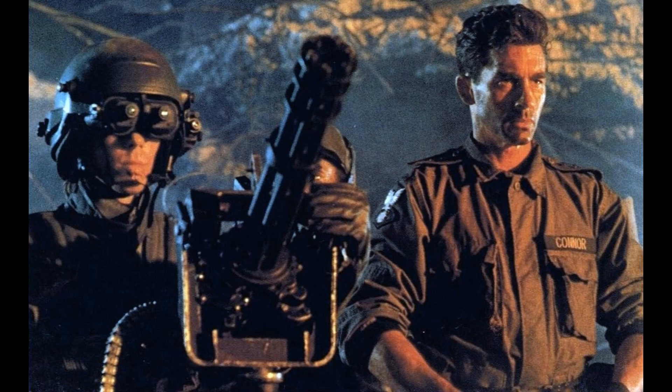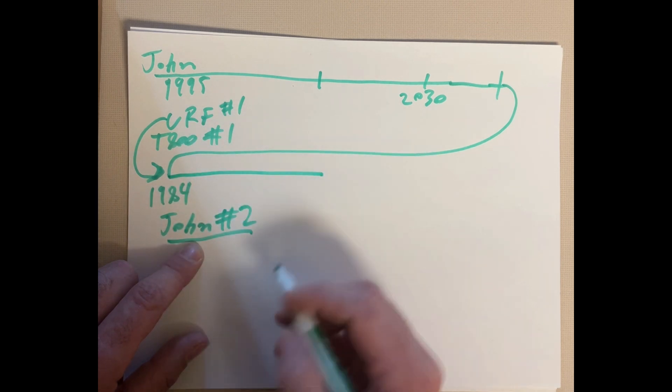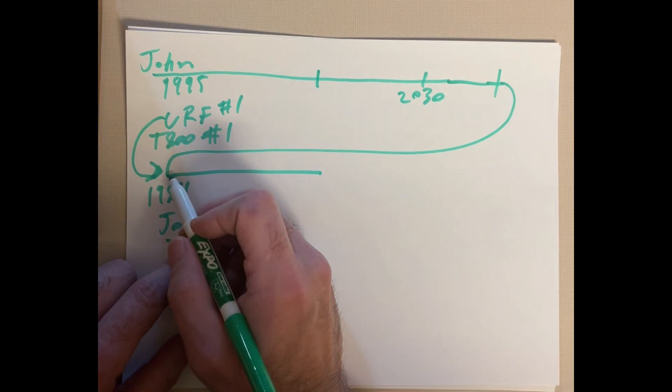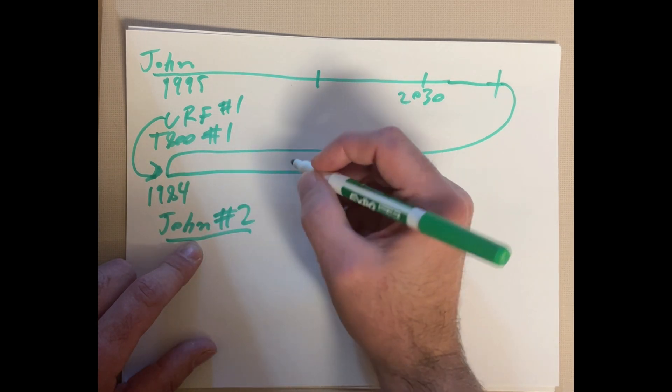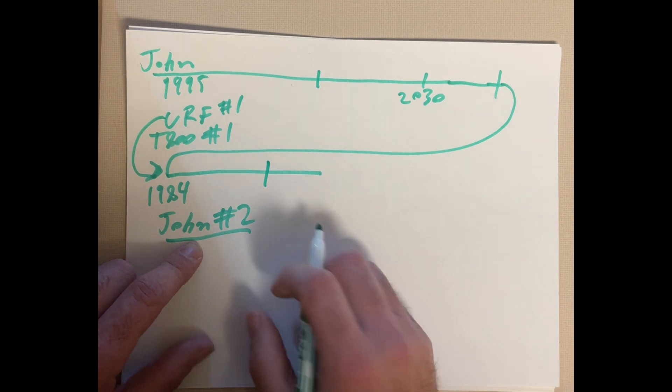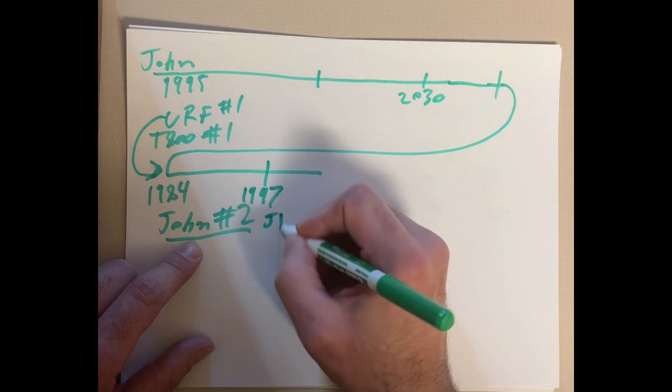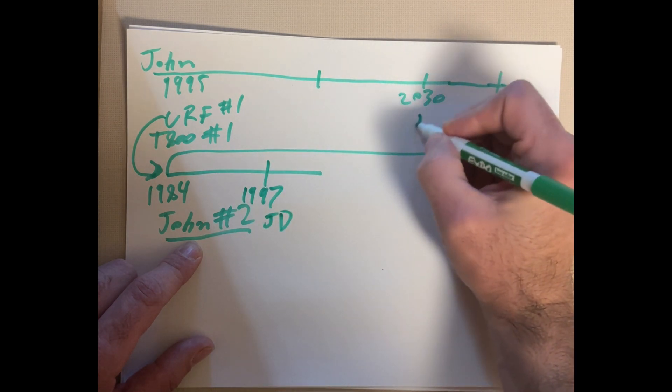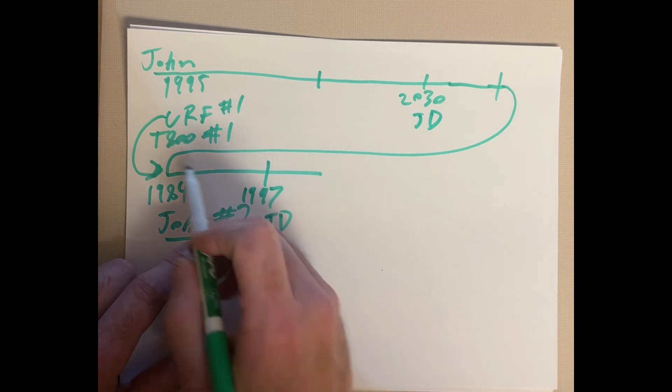This is the John we see in the future scenes of T-2. So, in this timeline, the T-800 that was sent back, its remains are left intact. Cyberdyne finds them and is able to accelerate Judgment Day substantially to 1997. So, now we have a 1997 Judgment Day because of this first T-800 that was sent back.